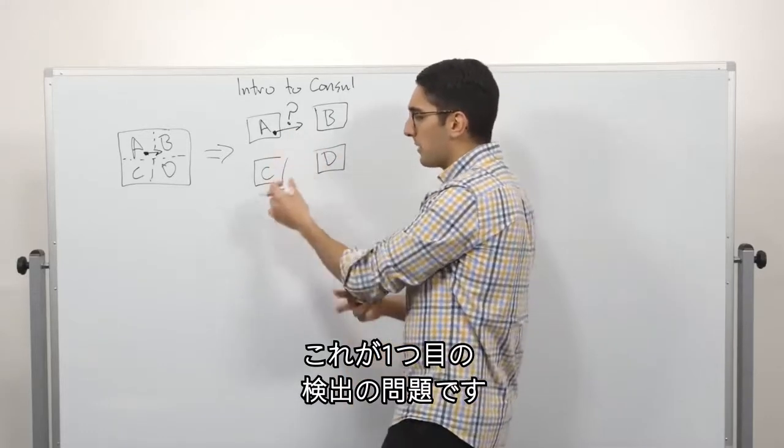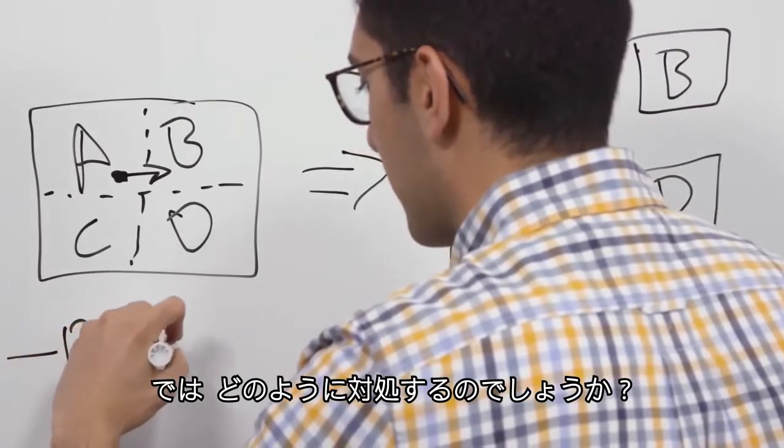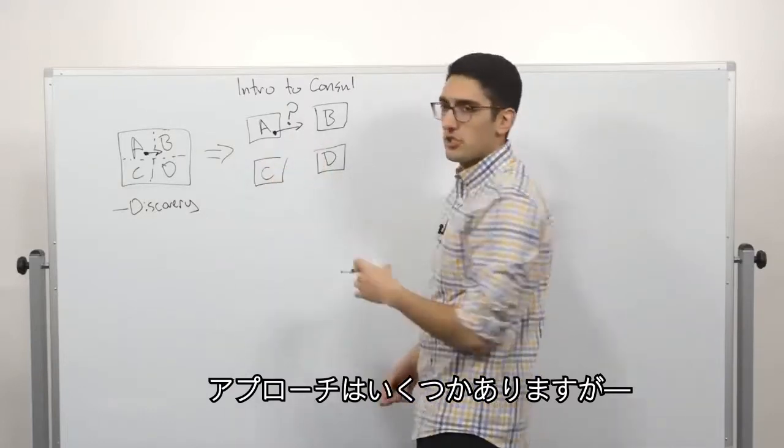We can measure the latency impact in milliseconds between these nodes. So this first level problem is what we call discovery. How do these different pieces discover one another?